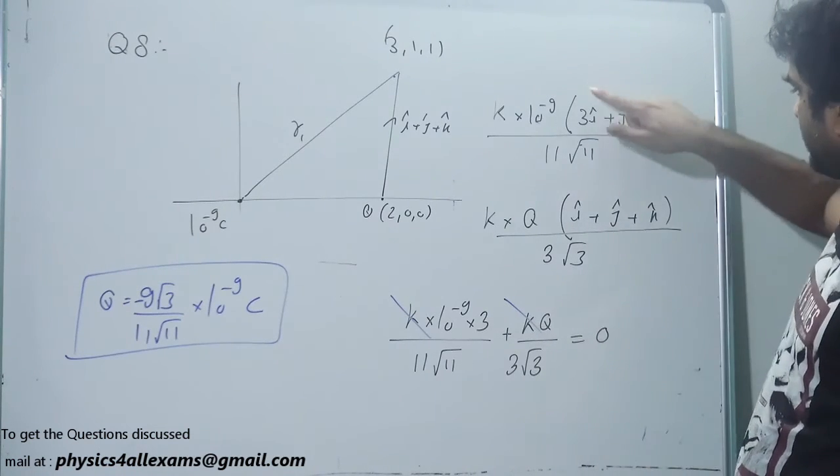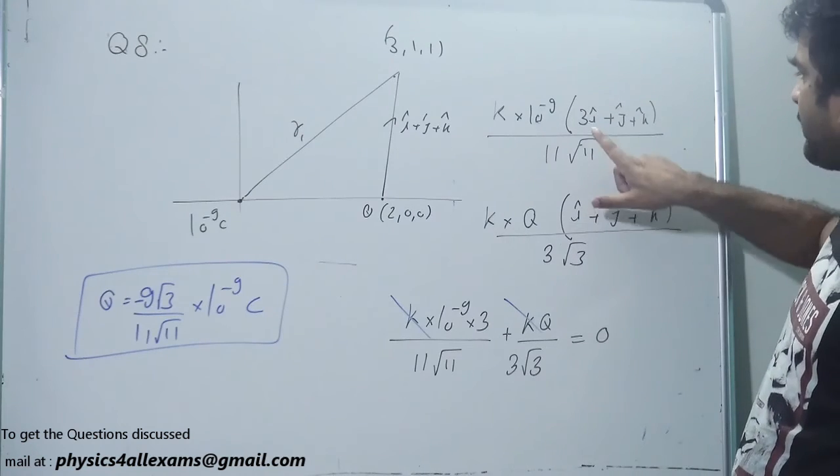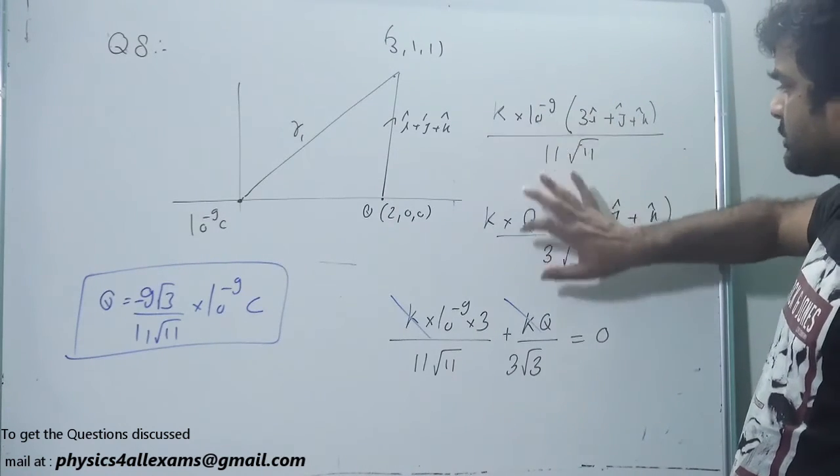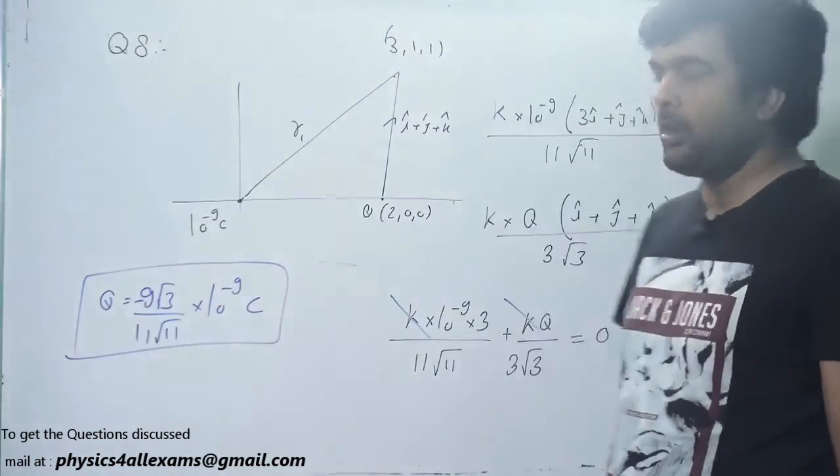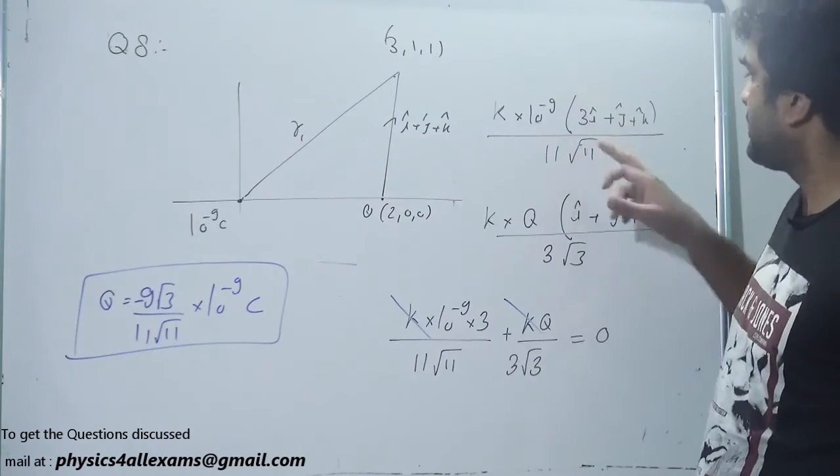Because if the x-component has to be 0, because the factor of i cap is 3, the sum of these two becomes 0 when Q is equal to this much value. If this is 0, this won't be 0.